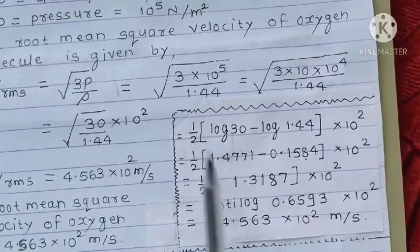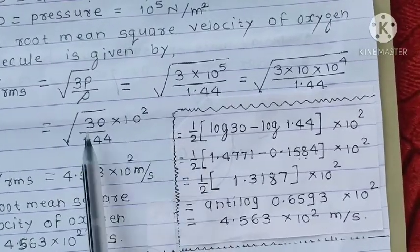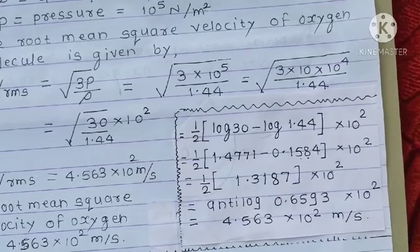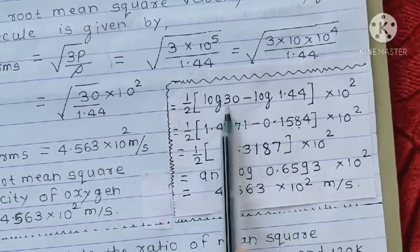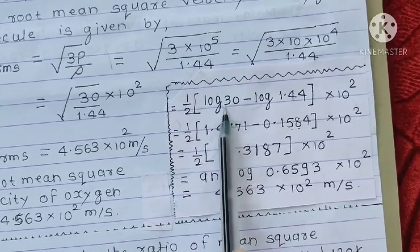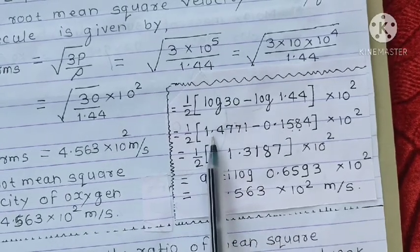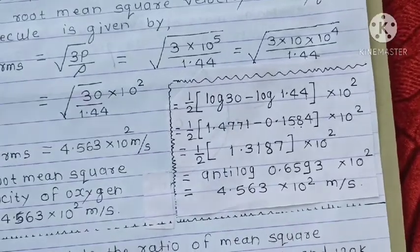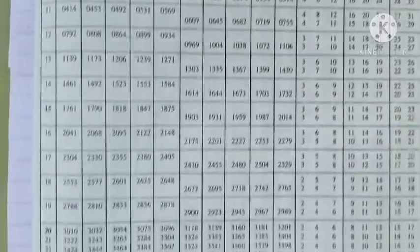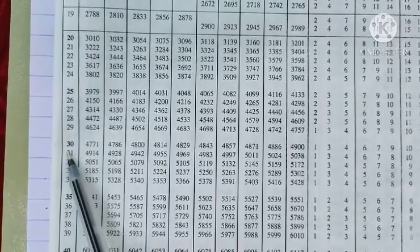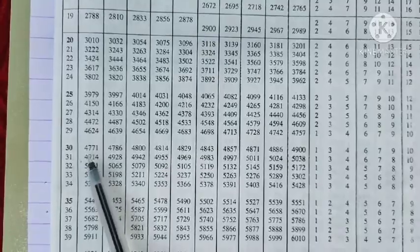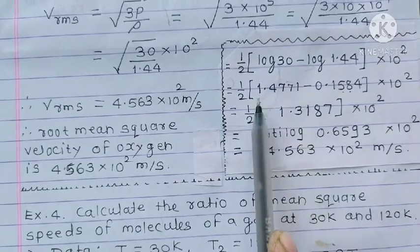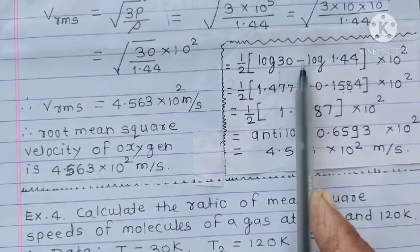30 upon 1.44 under root, then we will say 10 raise to 2, then we will take root. This is 1 upon 2 log of 30 minus log of 1.44, 10 raise to 2 as it is. 1 upon 2, log 30, log 1.44.